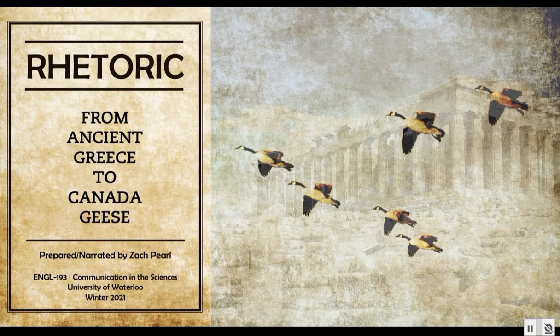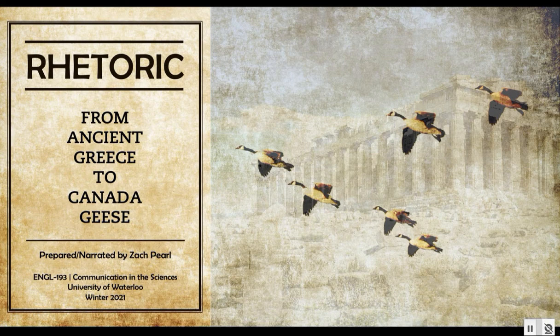Welcome to the first lecture in English 193, Communication in the Sciences. This lecture is titled 'Rhetoric from Ancient Greece to Canada Geese.' There is meant to be some humor in this. We'll start out with a very practical but short history of where rhetoric comes from in the ancient Western world, and end on something more topical and local to University of Waterloo.